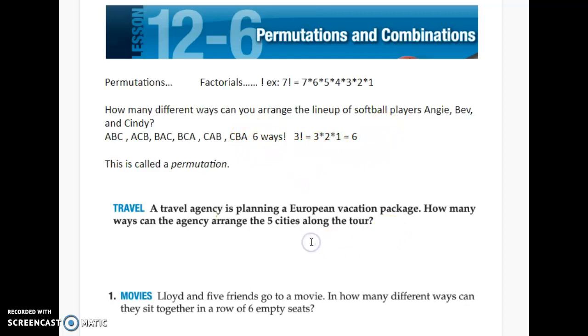Okay, so let's try another example. A travel agency is planning a European vacation package. How many ways can the agency arrange the five cities along the tour? Well, how many cities are there? Five. Do the factorial of that. Five times four, three, two, one. And what do you get? You should get 120. How do you do?